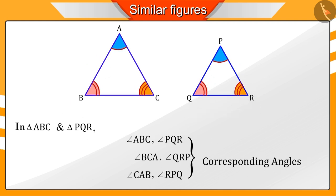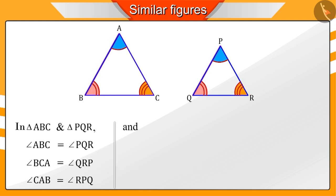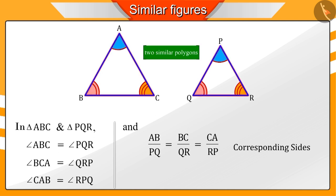When we observe the triangles ABC and PQR, we notice that their corresponding angles are equal and their corresponding sides are proportional. In the previous video, we learned that two polygons are similar if their corresponding angles are equal and their corresponding sides are proportional.